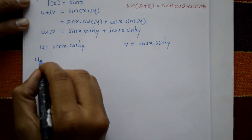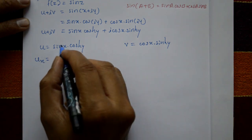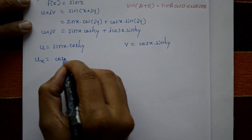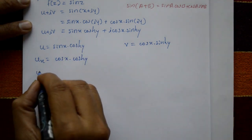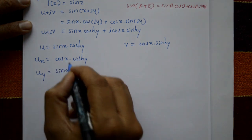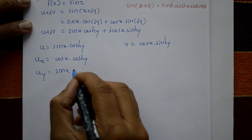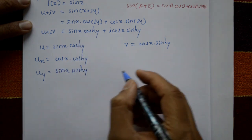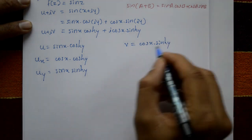Differentiating u with respect to x: ∂u/∂x equals cos x·cosh y. Differentiating u with respect to y: ∂u/∂y equals sin x·sinh y. Differentiating v with respect to x: ∂v/∂x equals minus sin x·sinh y. Differentiating v with respect to y: ∂v/∂y equals cos x·cosh y.